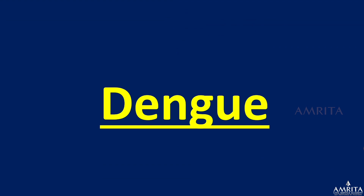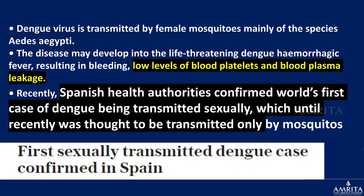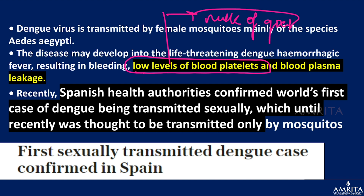Now let us discuss dengue. In dengue, the blood platelet count drops significantly — you may have seen outbreaks in Delhi in recent years. Goat's milk became costly because people believed it helps the body produce more platelets. Dengue is a vector-borne disease caused by Aedes aegypti.